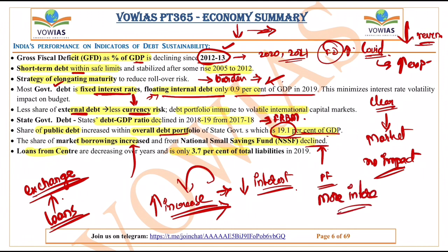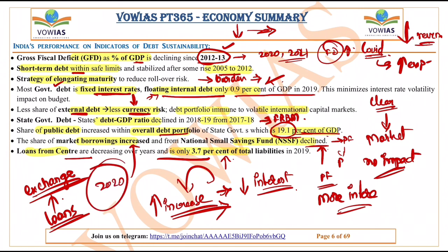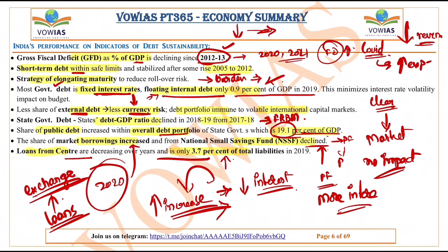When an agency gives high interest rates to customers, it charges high interest rates on loans. That is the reason the government now borrows more from the market rather than the NSSF. Loans from the Center to states are decreasing over years and are only 0.37% of total liabilities in 2019. But 2020 has changed everything — government loans increased, expenditure increased, revenue decreased, and the growth rate decreased. COVID-19 has caused a lot of misery to the economy, which was already on a declining trend in the past few years.